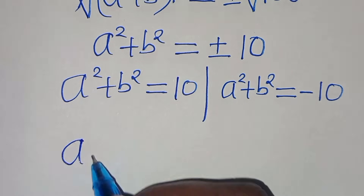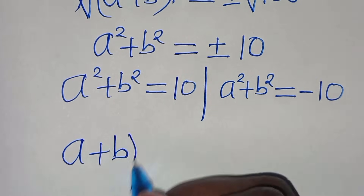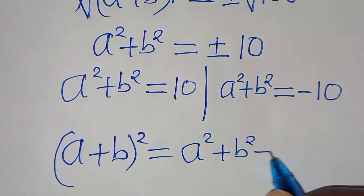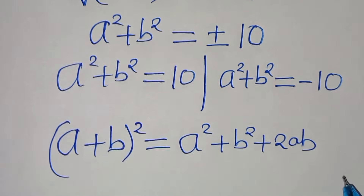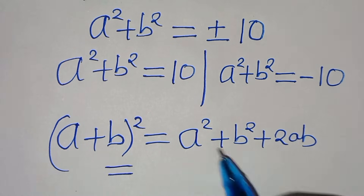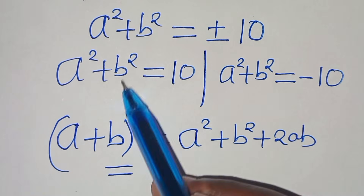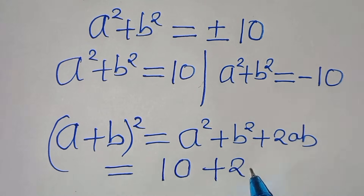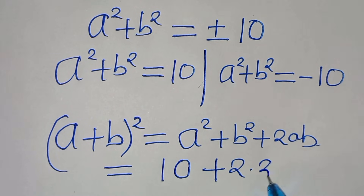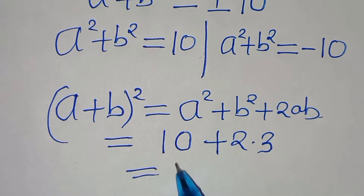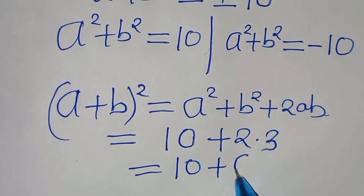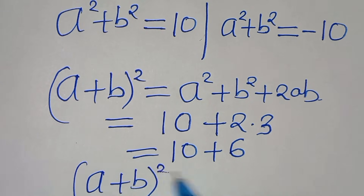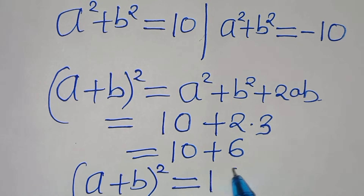Now, (a plus b) squared equals a squared plus b squared plus 2ab. Starting with a squared plus b squared equals 10: substituting gives 10 plus 2 times ab, and since ab equals 3, this is 10 plus 6, so (a plus b) squared equals 16.